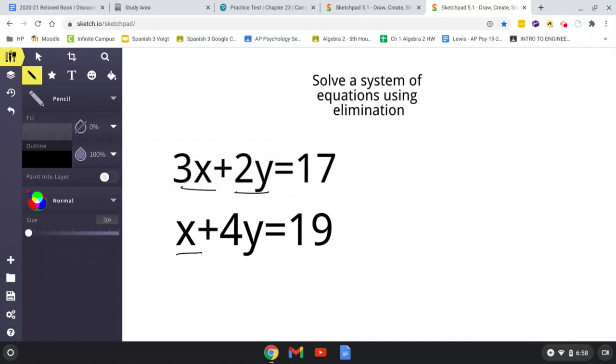the coefficients the same value. So let's say we want to make the x's equal. What we're going to do is multiply the entire equation by 3.